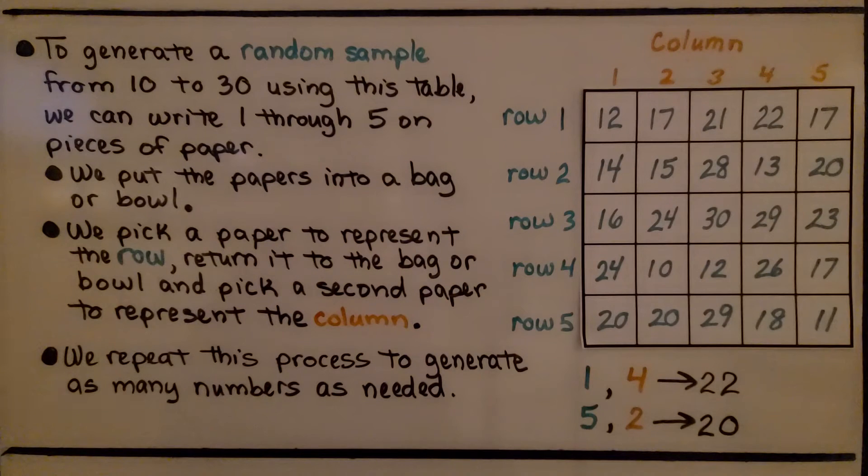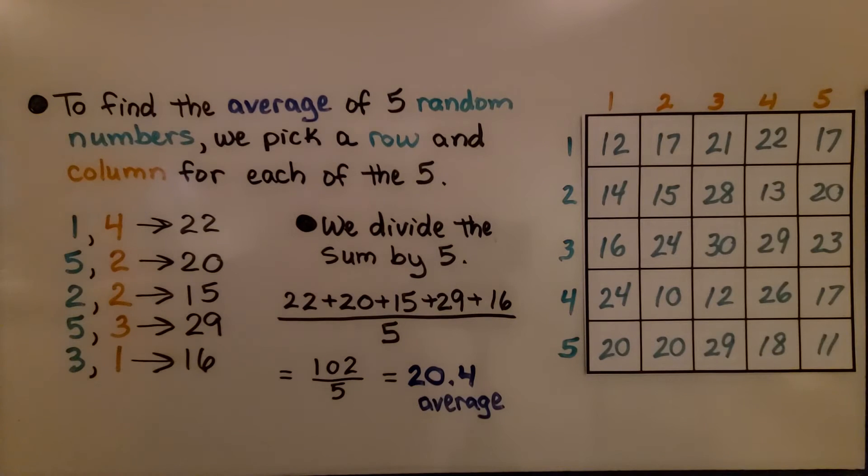We keep doing this. We repeat this process to generate as many numbers as needed. To find the average of five random numbers, we pick a row and a column for each of the five. So that means we're going to be picking ten times, two times for each one.